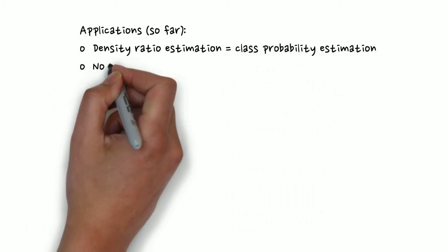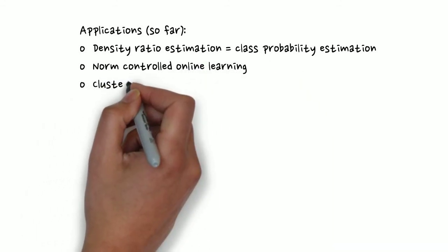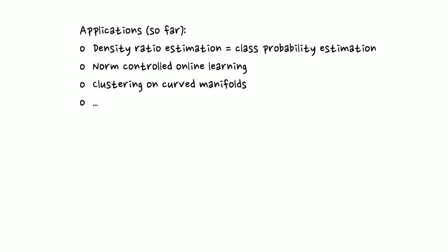We prove a new bound on norm-controlled online learning, and we show how to apply k-means++ seeding on curved manifolds while keeping the global approximation bounds of flat manifolds.